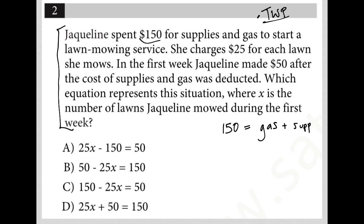Next sentence: She charges $25 for each lawn she mows. So, 25 equals lawn. And obviously she can cut more than one lawn, so I know this is going to be a variable. I'm going to say lawn equals X — X is the number of lawns.